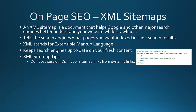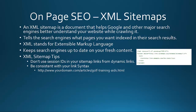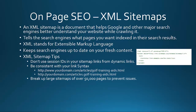Here are some XML sitemap tips. Don't use session IDs in your sitemap links from dynamic links. An XML sitemap is kind of like an RSS feed — it's one other way that Google can spider and find all your pages. Within WordPress there's a tool called the XML Sitemap plugin, which is definitely advisable to use if you have a WordPress-based website. Don't use session IDs, and be consistent with your link syntax so that everything is similar.